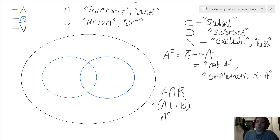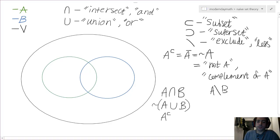Okay, so now, if we wanted to talk about A less B or A exclude B, we'd simply be dealing with A intersecting B complement. Alright, so A and not B.